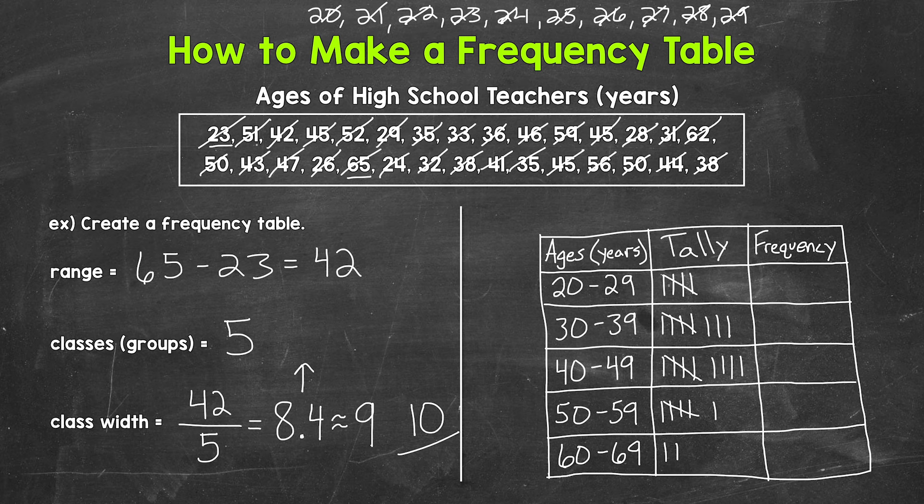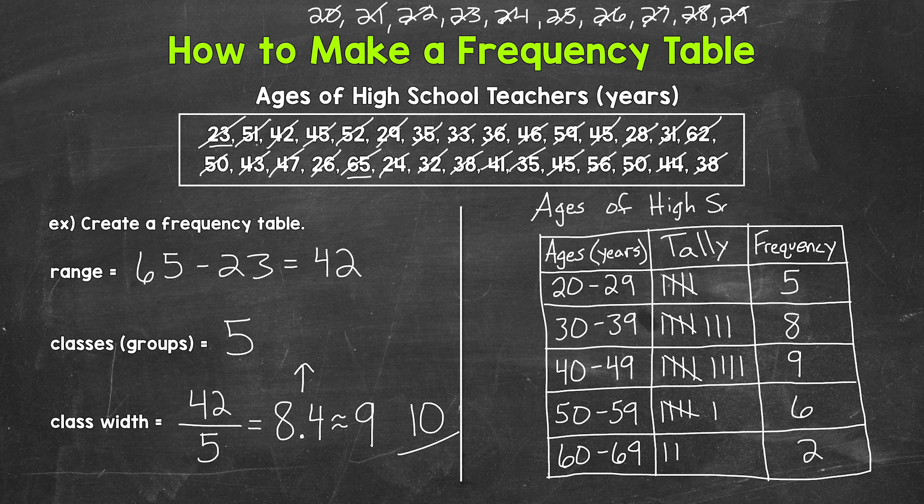Lastly, let's count everything up and put the final frequency for each age group. Let's start with 20 to 29 years old, we have five teachers. For 30 to 39 years old, we have eight teachers. For 40 to 49 years old, we have nine teachers. For 50 to 59 years old, we have six teachers. And then for 60 to 69 years old, we have two teachers. Let's put a title up top here: Ages of High School Teachers. And we are done. So there you have it. There are the basics of creating a grouped frequency table or grouped frequency distribution table. I hope that helped. Thanks so much for watching. Until next time, peace.